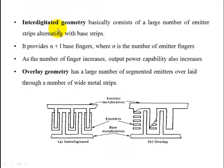Interdigitated geometry has a finger-like structure. It basically consists of a large number of emitter strips alternating with base strips. It provides n plus 1 base fingers, where n is the number of emitter fingers. As the number of fingers increases, output power capability also increases.